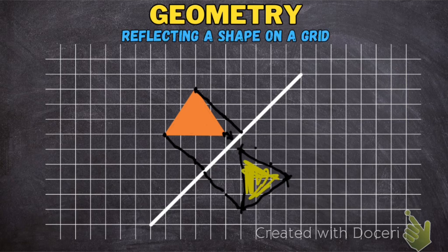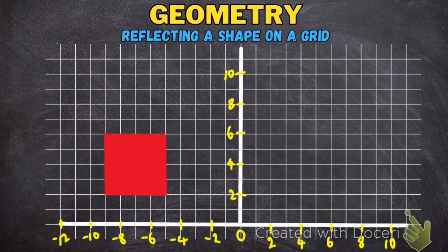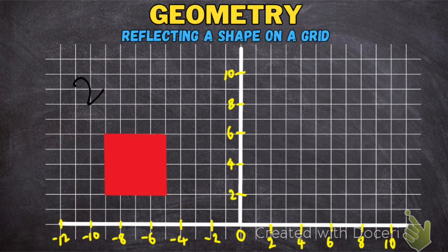So now we've learned the skill of how to reflect a shape on a grid. Now let's take a look at some example questions you may get in an exam. One exam question may say: reflect this shape from the second quadrant onto the first quadrant. Or it might say: reflect the shape horizontally and give the new coordinates of each corner.